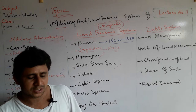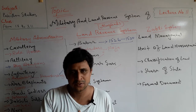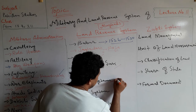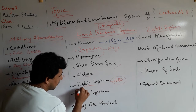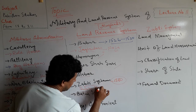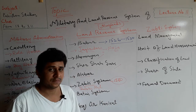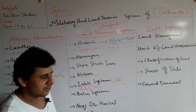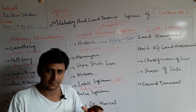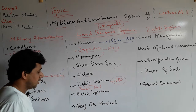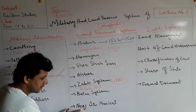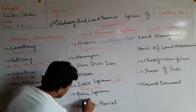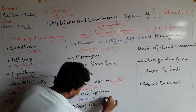Akbar brought reforms to the land revenue system. He introduced the Zabti system in 1580, with Todarmal serving as his finance minister at that time. However, the Zabti system was not applied throughout the entire Mughal Empire, so Akbar also introduced the Batai system and the Nasak or Konkut system. The Batai system was introduced in Sindh, Kashmir, and Kandahar.